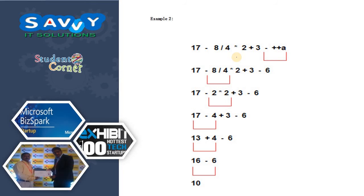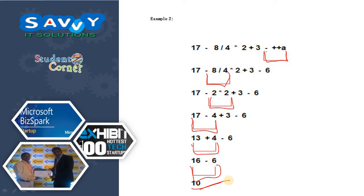Similarly, in this expression: first evaluate modulo, next division, next multiplication, next subtraction, next addition — and you will get the result. This is exactly how expression evaluation works. In this topic, what we learned is: first, how to evaluate an expression in C language; second, the types of expressions; and finally, the precedence and associativity of operators.